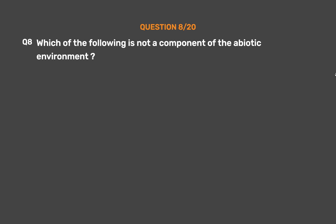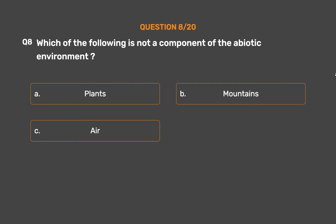Question No. 8. Which of the following is not a component of the abiotic environment? Option A: Plants. Option B: Mountains. Option C: Air. Option D: Soil.